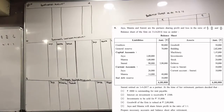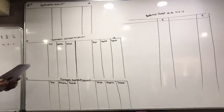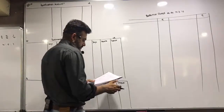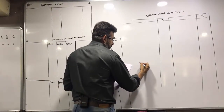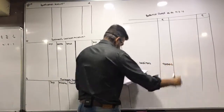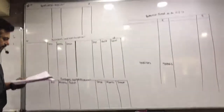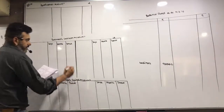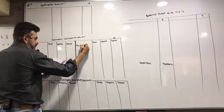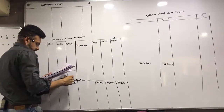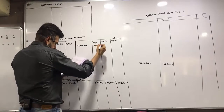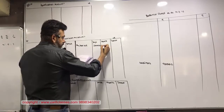Let's start with the solution. Creditors: 90,000. Writing the opening balance — current account by balance brought forward: Jaya 26,000 and Mamata 14,000.